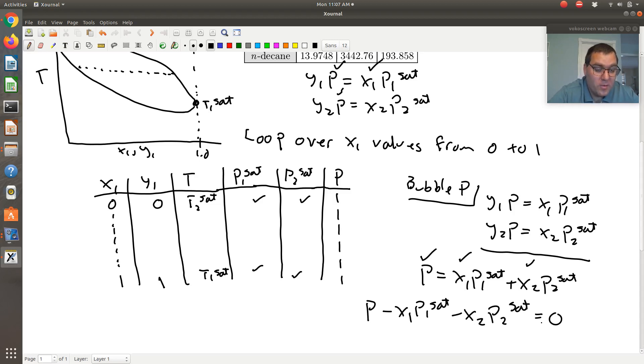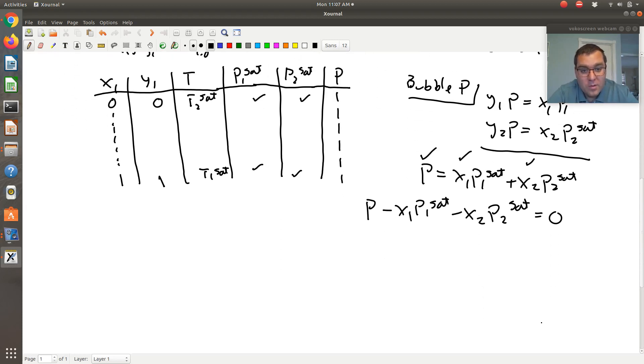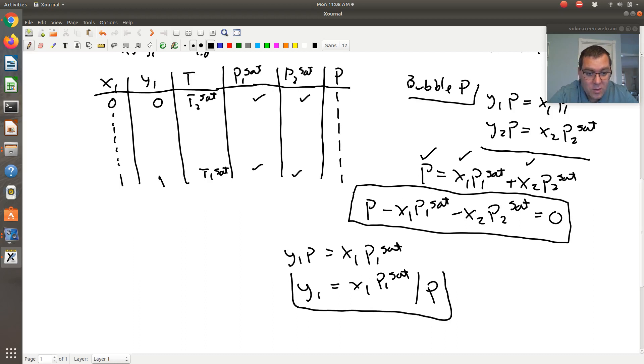So what might be preferred rather than using fsolve to solve the two equations simultaneously is I could first do bubble P calculation and I could just solve for my single unknown T using fsolve. And then once I have P, well, then I just go back over my Raoult's Law expression, Y1 P is X1 P1sat. And once I solve for T and hence I know P1sat and P2sat, Y1 would just be X1 P1sat over P. So I could first solve for T via my bubble P calculation. Then once I have T, by finding the T so that this equation is satisfied, so which I get the right vapor pressure so that this equation is satisfied. Then once I have T, then I can just directly solve for Y.